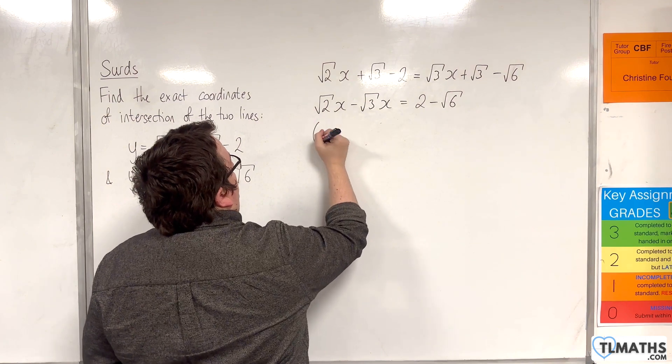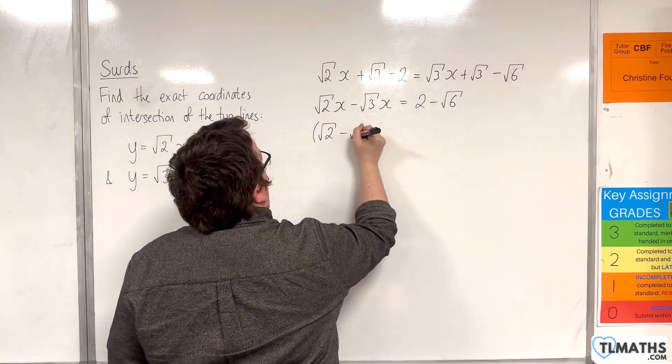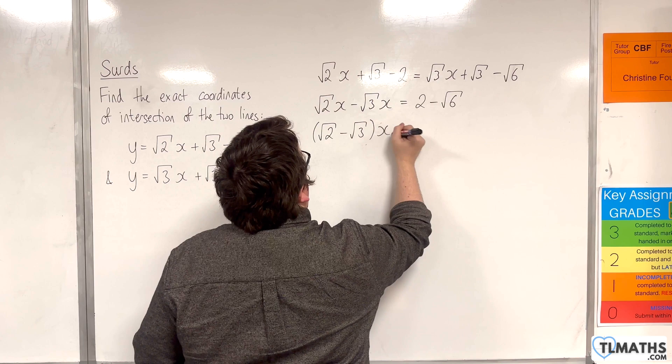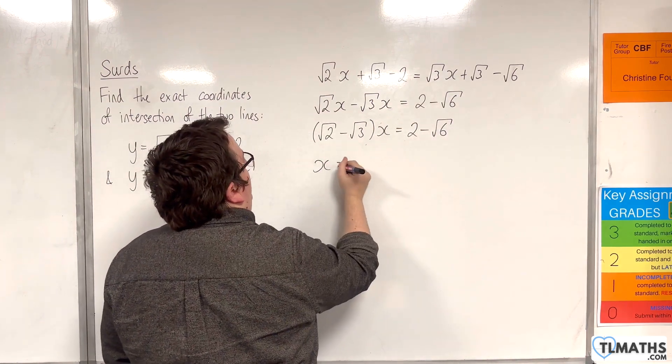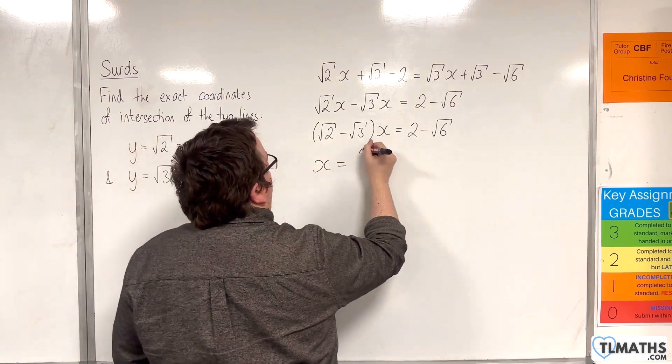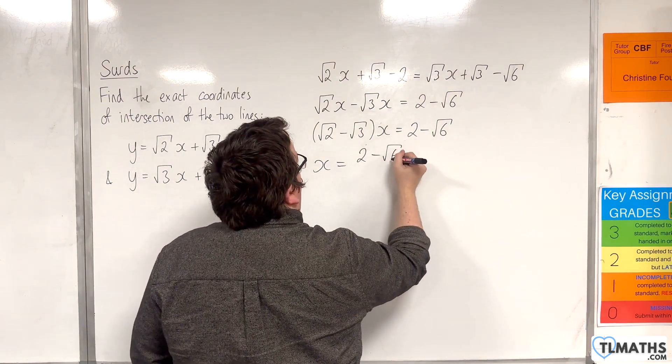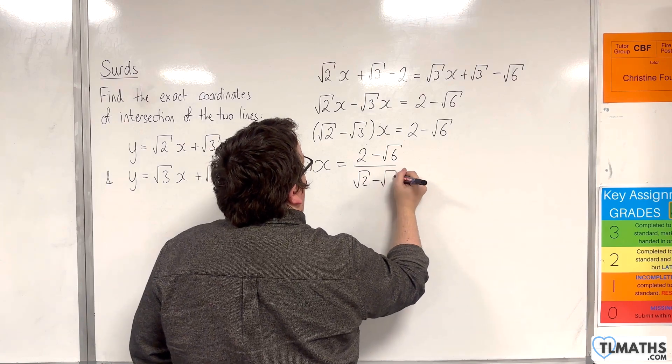So I'll factorise the left-hand side: root 2 take away root 3 times x is equal to 2 take away root 6. And so x, dividing both sides by the bracket, is 2 take away root 6 over root 2 take away root 3.